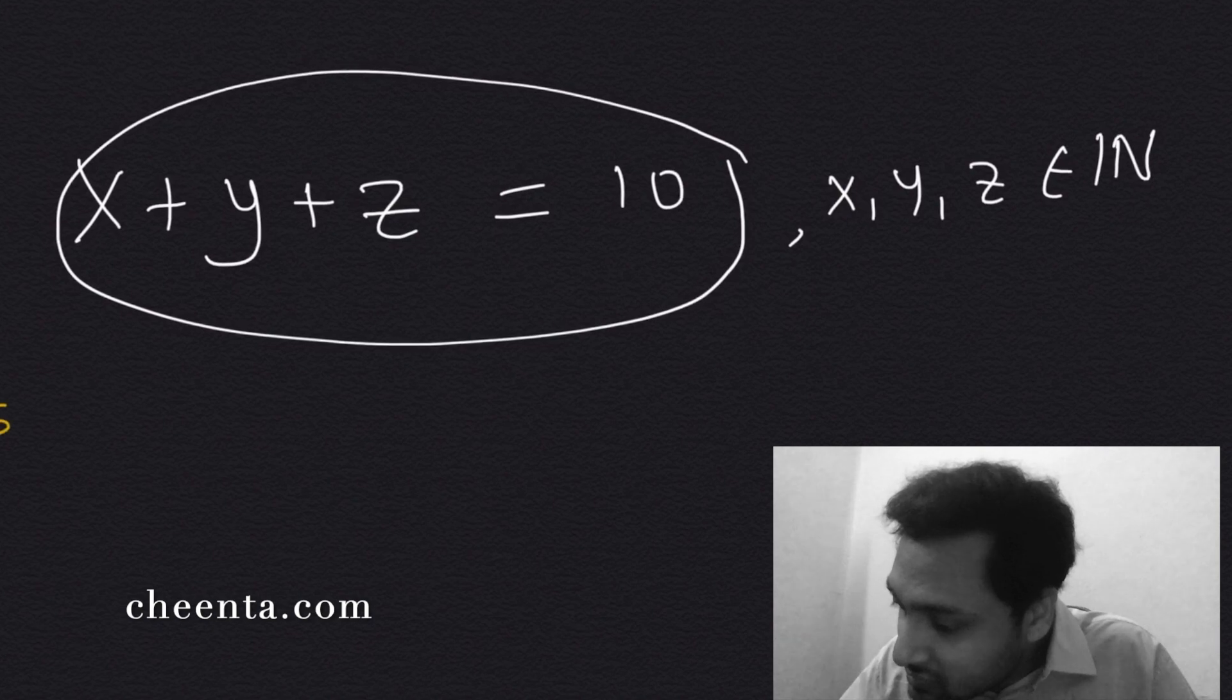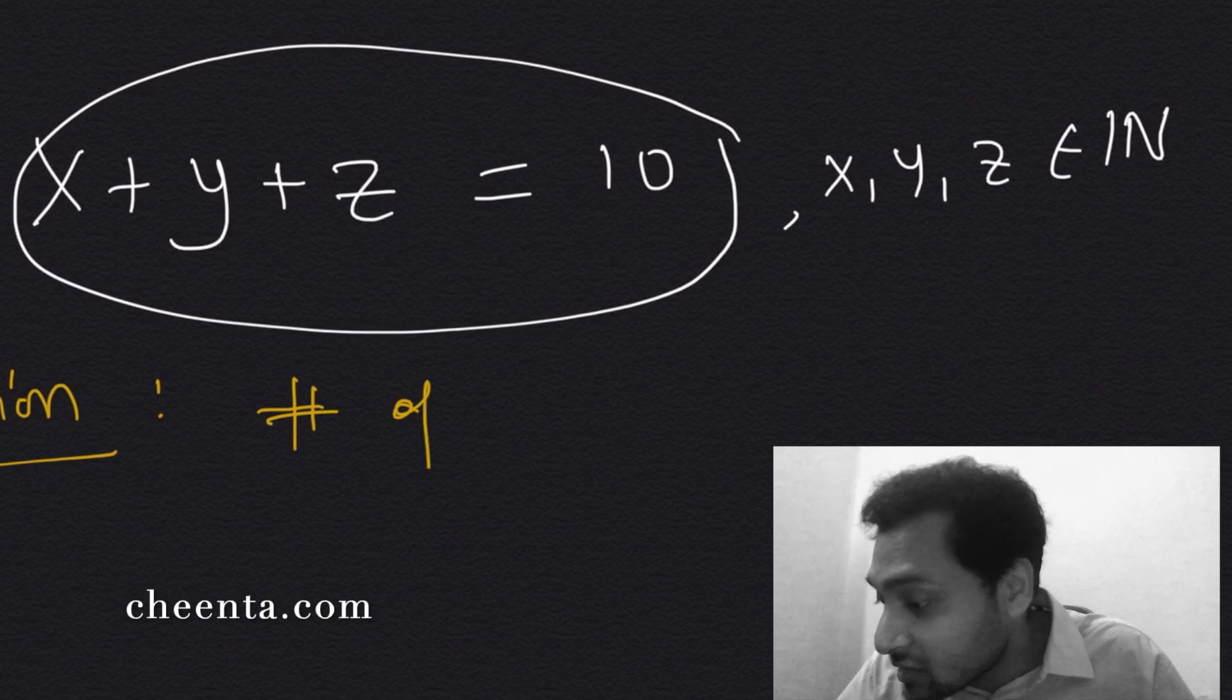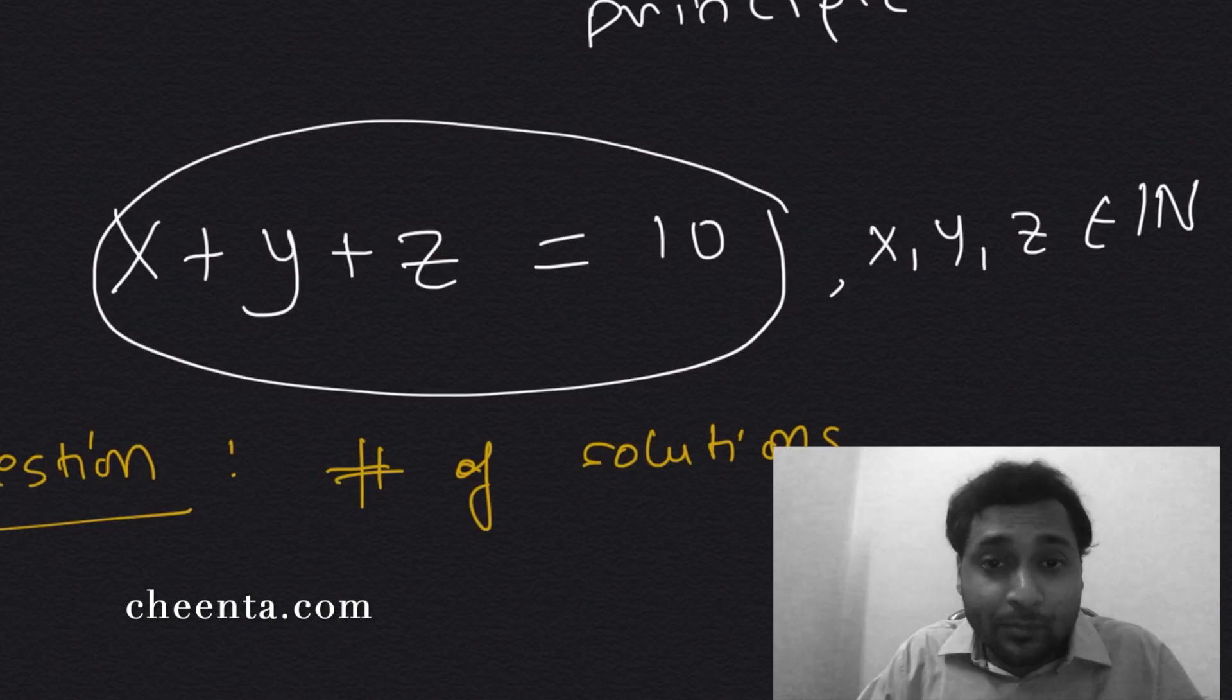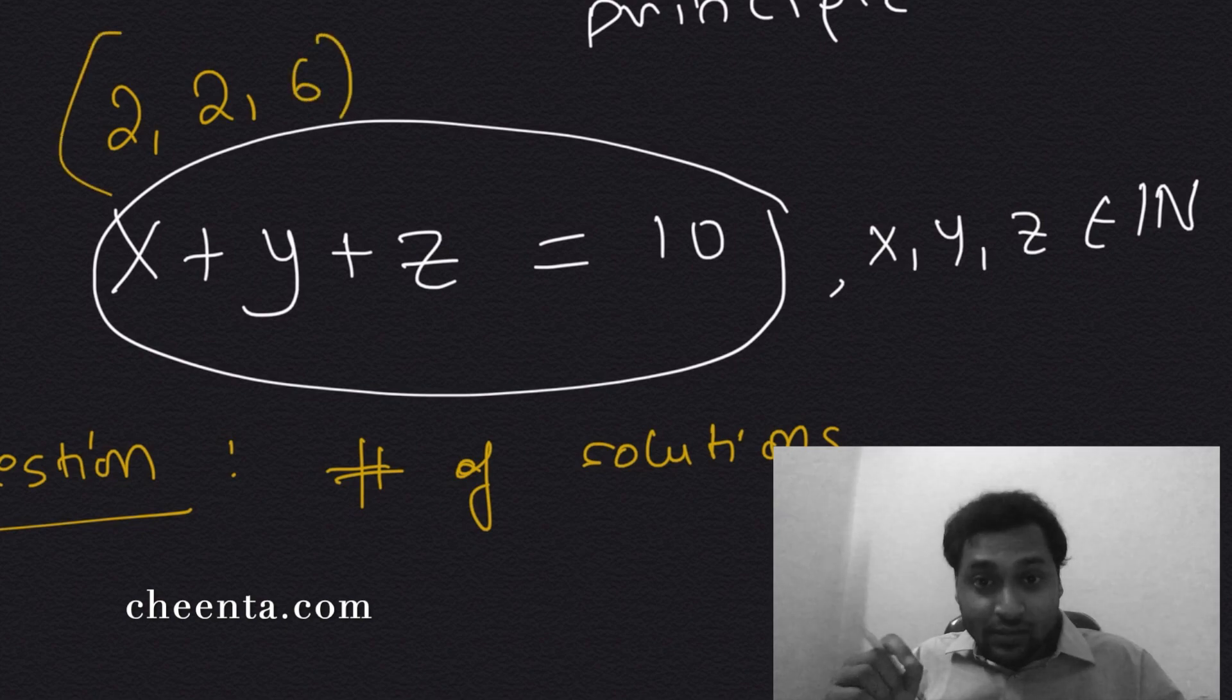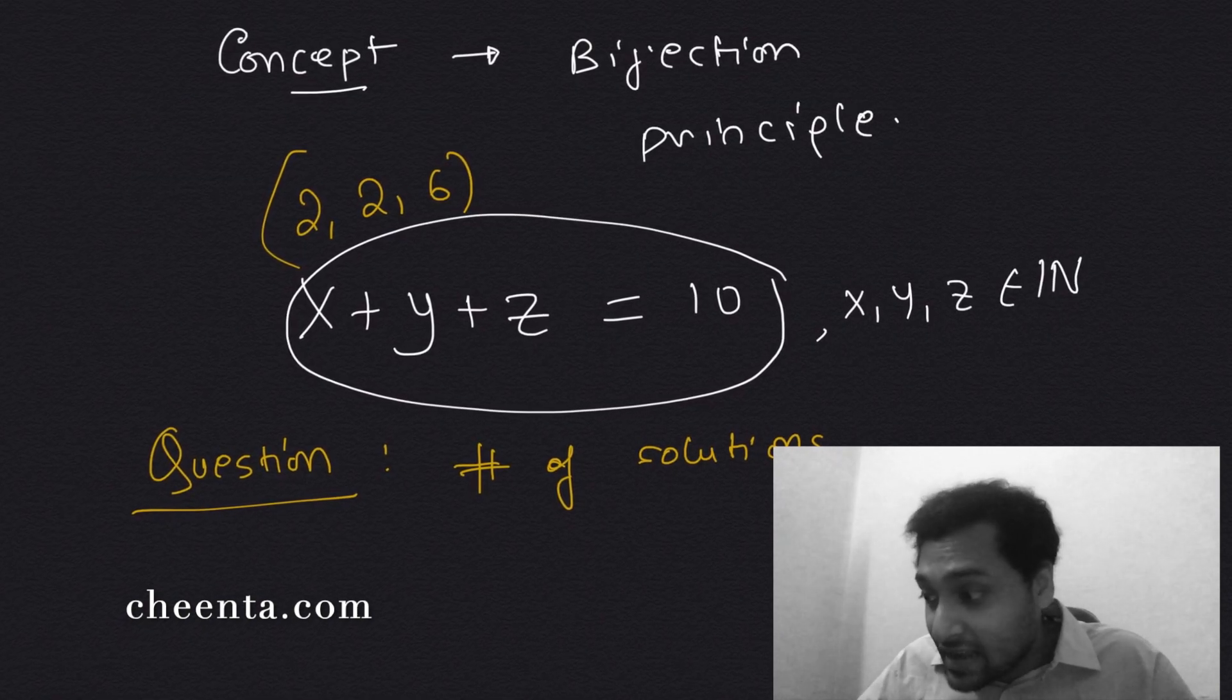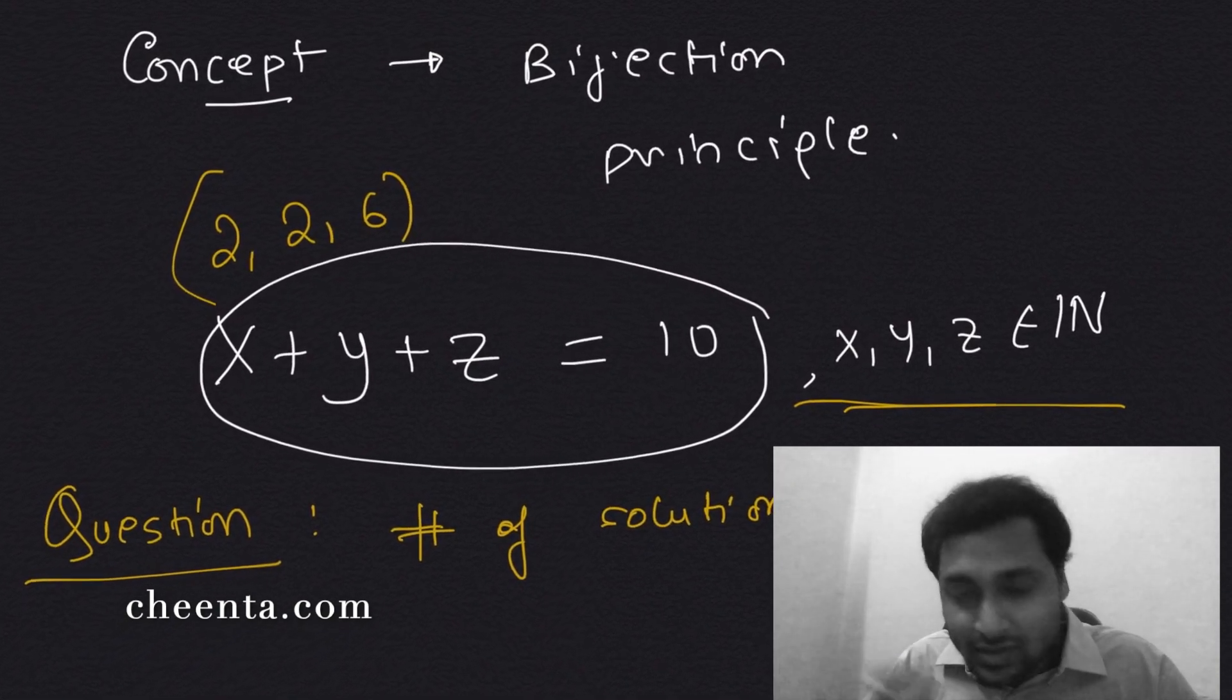So I will give you an example of what I mean by a solution. For example, 2, 2, 6 is a solution: x equals 2, y equals 2, z equals 6. That is a solution. So 2 plus 2 plus 6 is 10. x, y, and z are natural numbers or positive integers, so none of them can be 0 or fractions or decimals.